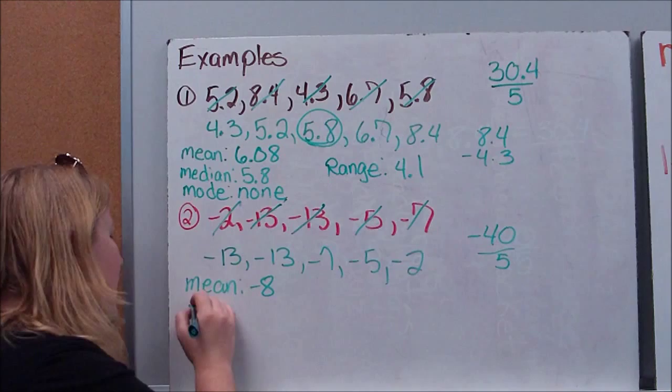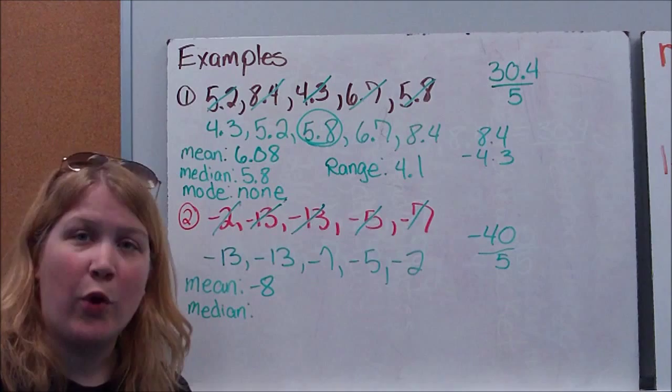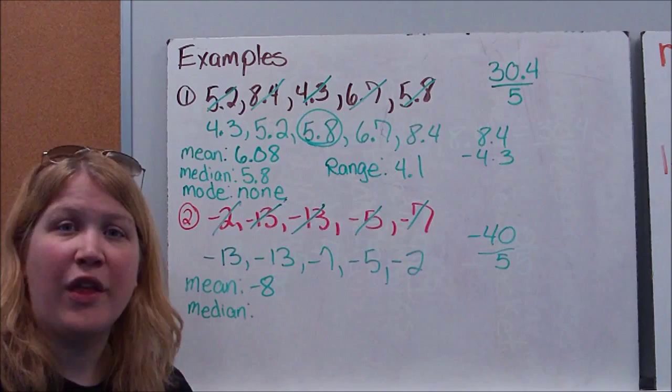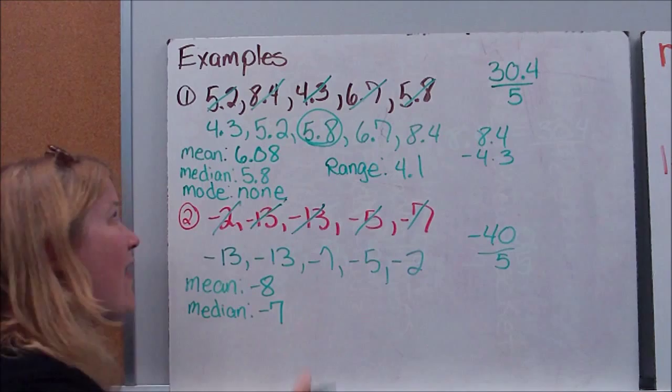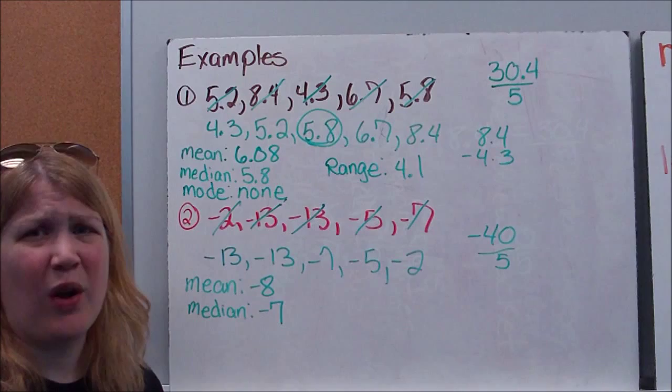Median refers to our middle number. Again, there's an odd number of digits, so I'm going to have an exact middle. Add one onto it, 6 divided by 2, 3. The third spot is my middle number. 1, 2, 3. My median is negative 7. And you'll notice that these numbers are pretty close together. It makes sense since we're talking about a central tendency. Where do the numbers tend to fall?